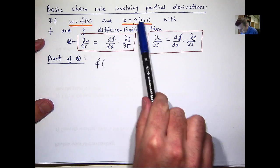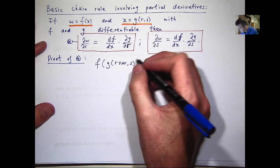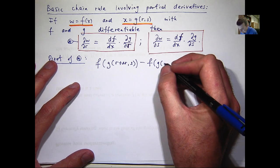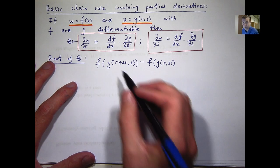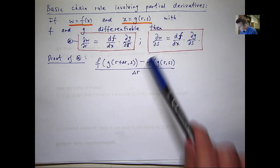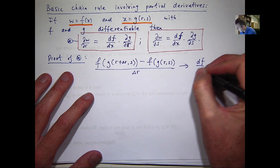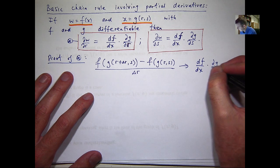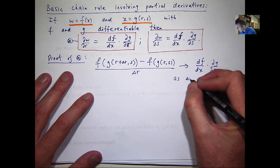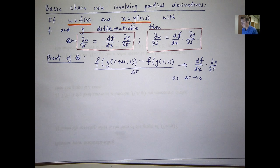So if we sort of combine these functions, we want to show that the difference of these functions of functions, if you like, divided by this delta r, essentially this quotient tends to the following product as delta r goes to 0. So, in other words, the limit of this, as delta r goes to 0, equals this product.